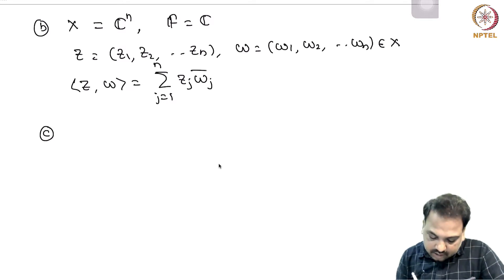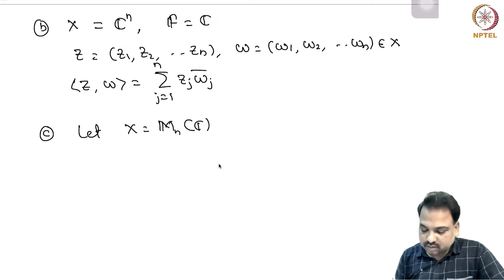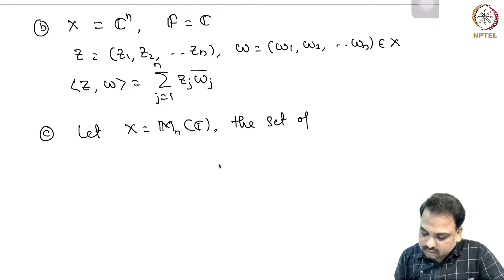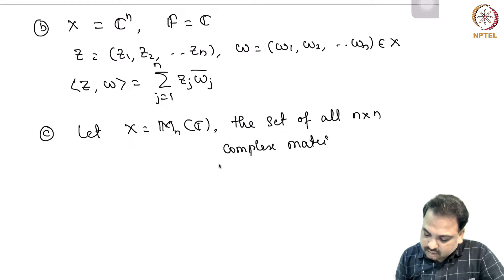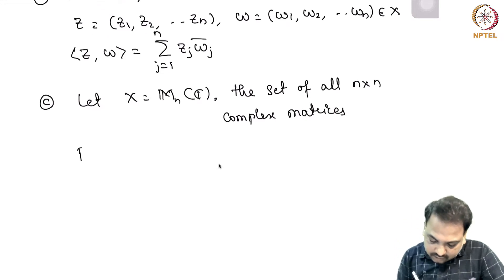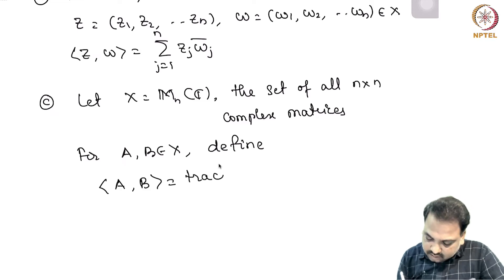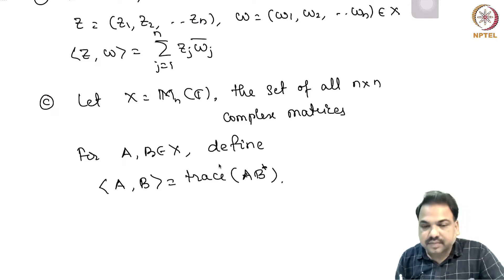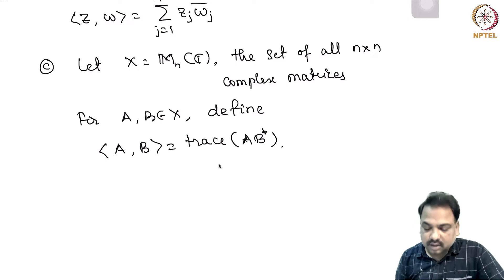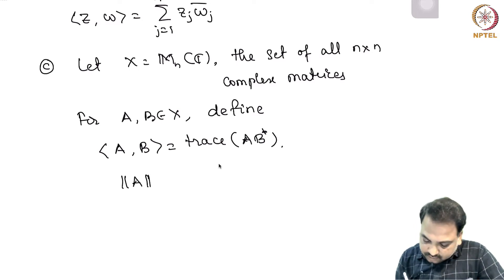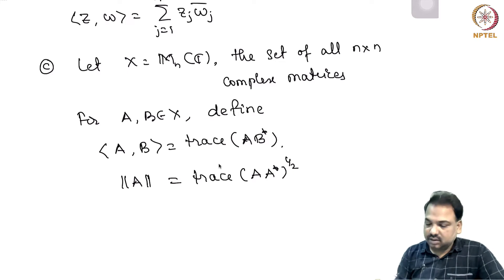Another important example: let us take X to be M_n(C), the set of all n by n complex matrices. For A, B in X, define ⟨A, B⟩ = trace(AB*). Then we can show that this is an inner product on X and the induced norm is ||A|| = trace(AA*)^(1/2). So this is the induced norm.